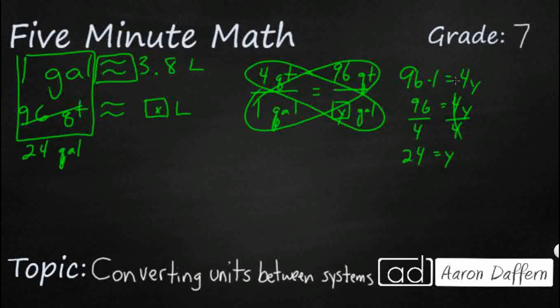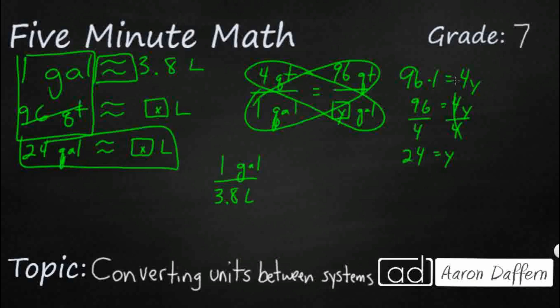So that's a little bit better. 24 gallons is approximately how many liters. We may need to do a conversion within the same system before converting between systems. Let's set up another proportion because we know 1 gallon equals 3.8 liters. We're going to keep our like units in the numerator and denominator. 24 gallons equals my unknown X liters.